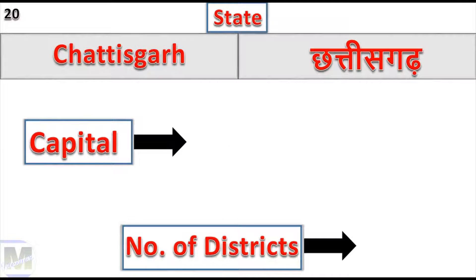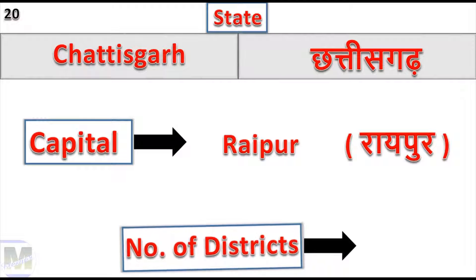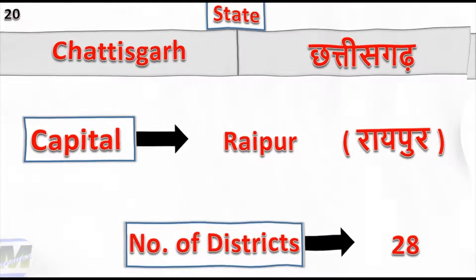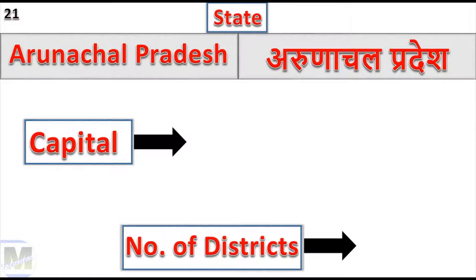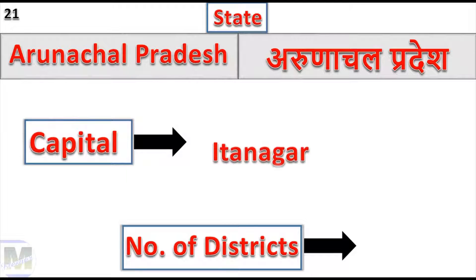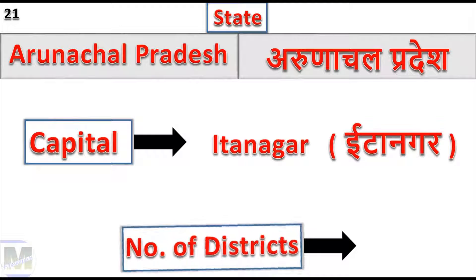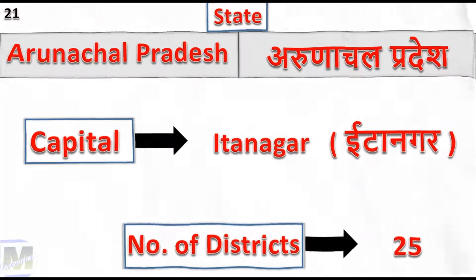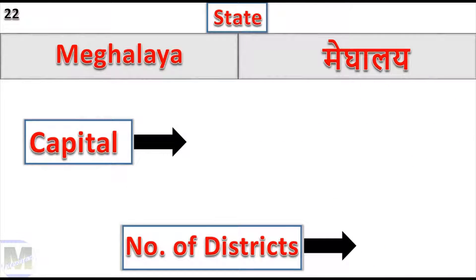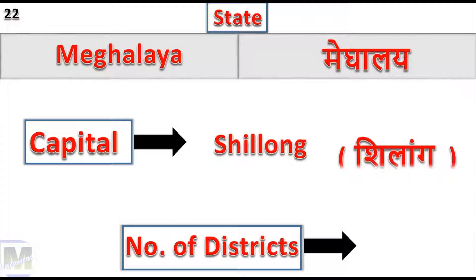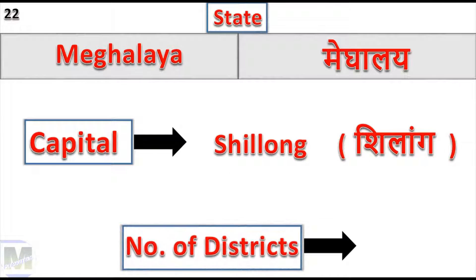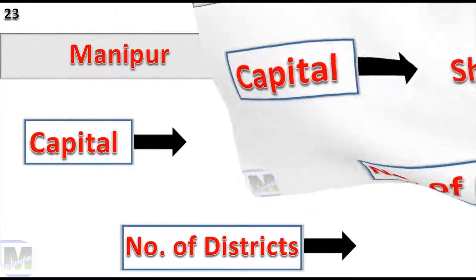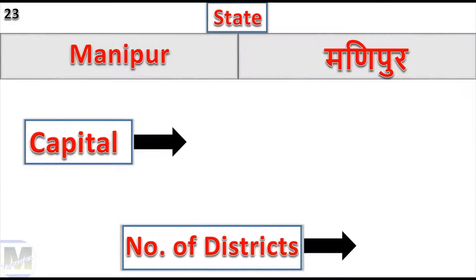Chhattisgarh: Capital Raipur, Number of Districts: 28. Arunachal Pradesh: Capital Itanagar, Number of Districts: 25. Meghalaya: Capital Shillong, Number of Districts: 11.